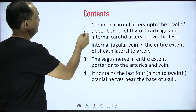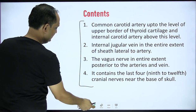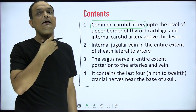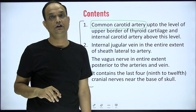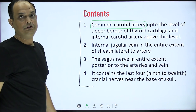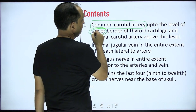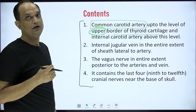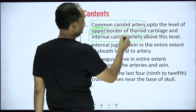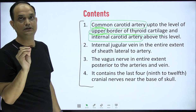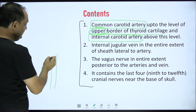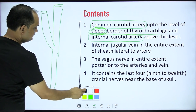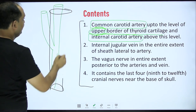The lower part is preferred because the artery is quite superficial just behind the sternocleidomastoid muscle there. Regarding contents: the first and most important content is the common carotid artery, which ascends and divides into the internal and external carotid arteries at the level of the upper border of the thyroid cartilage. Below that level, the entire common carotid artery is inside the sheath. Above that level, only the internal carotid artery remains in the sheath; the external carotid comes out.